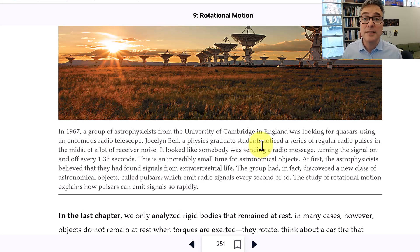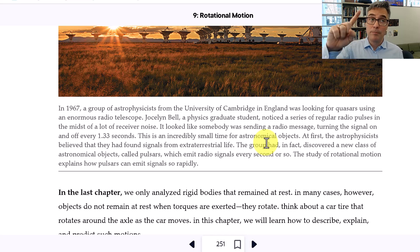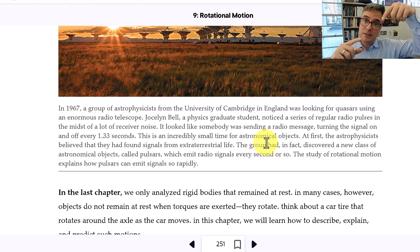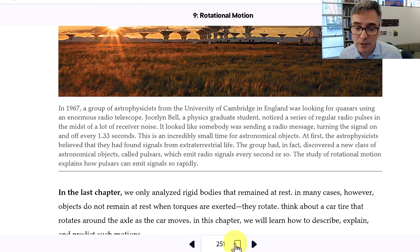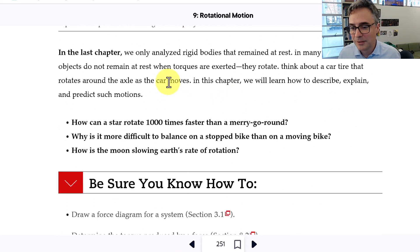So a pulsar is a star which has collapsed and is now rotating very, very fast, and it has a magnetic field axis which is not aligned with its rotation axis. What that does is it causes electrons to spiral around the magnetic field, emitting radio waves, and then as the star rotates you get pulses of radio waves coming from the star every second or so. It talks about rotating objects. How can a star rotate a thousand times faster than a merry-go-round?